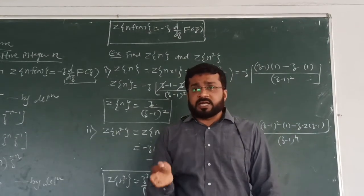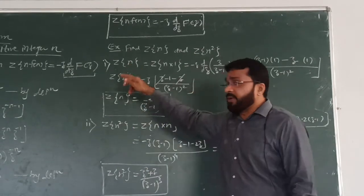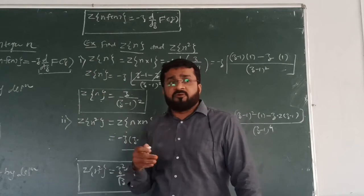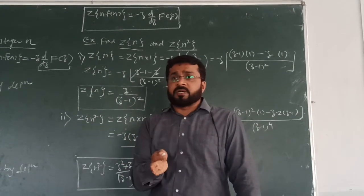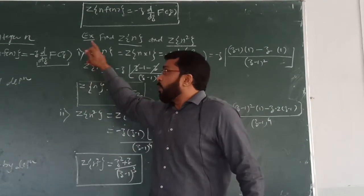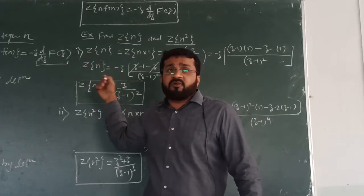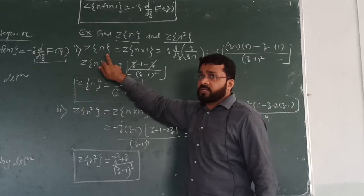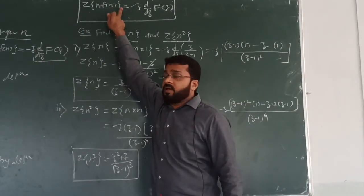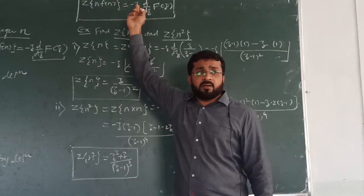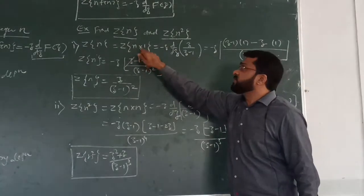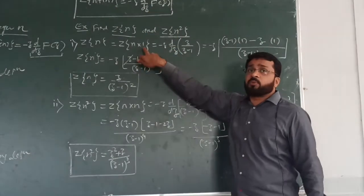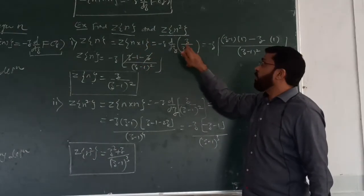We have proved that when we multiply F(n) by N, its Z-transformation is given by minus Z times d/dZ of F(Z). Now as an example, let us find the Z-transformation of N and the Z-transformation of N² using this property. We can write N as N times F(n) where F(n) equals 1. The Z-transform of 1 is Z upon Z minus 1, so that is our F(Z).